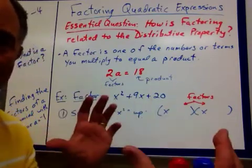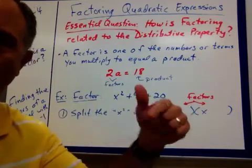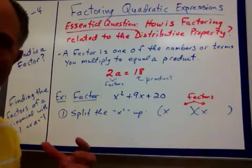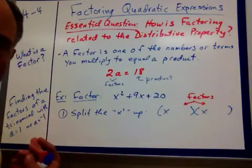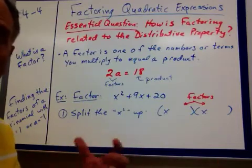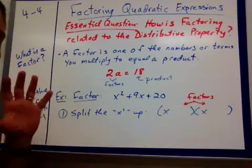If you were to take 2 times x plus 2, you would distribute. Well, now we're going to take that 2x squared plus 2, and now we want to be able to factor it out.